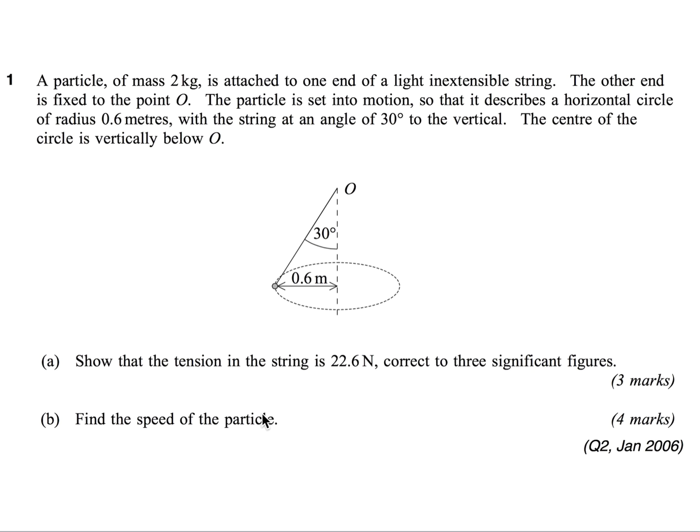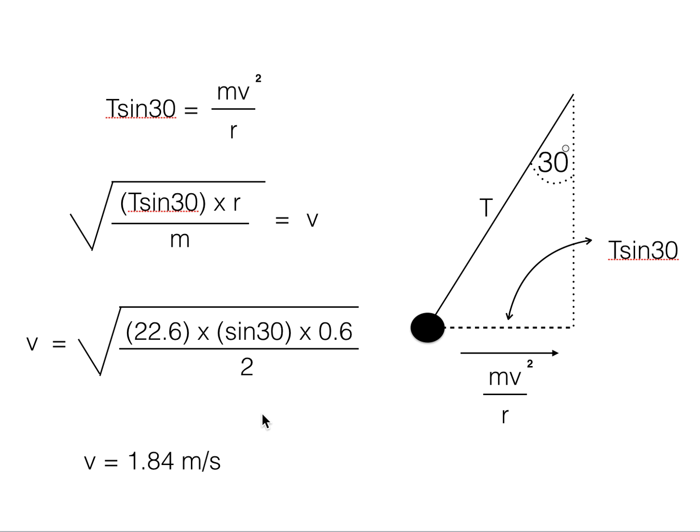...we're going to use the fact that there is a radially inward acting force, the centripetal force, that is equal to mv squared over r. And because this is provided by the horizontal component of the tension, which is equal to T sin 30, we can equate these two.